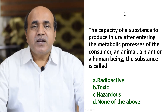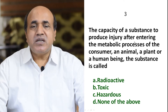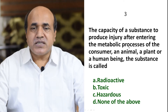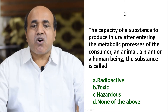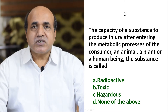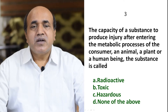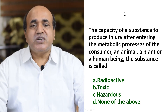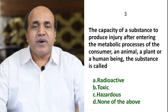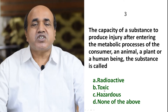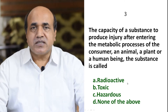Question 3: The capacity of a substance to produce injury after entering the metabolic process of the consumer — an animal, a plant, or a human being. The substance is called radioactive, toxic, hazardous, or none of the above? Wherever metabolic processes are involved and injury is due to metabolic processes, the substance is toxic. So B is the correct answer.